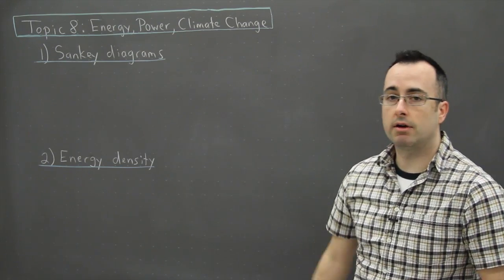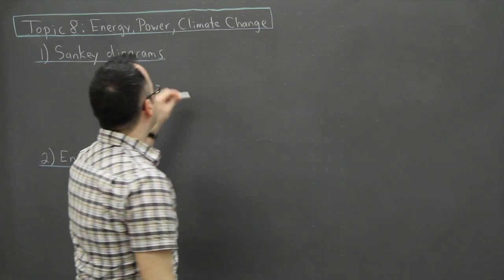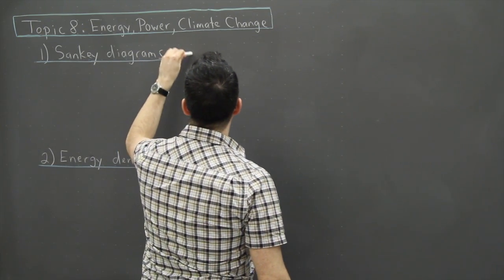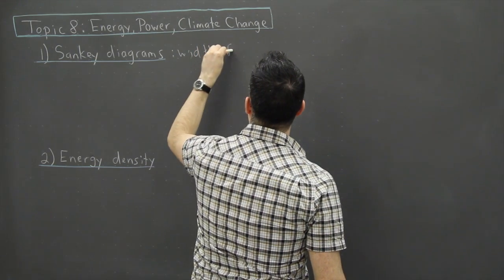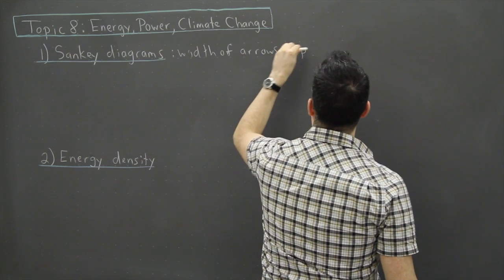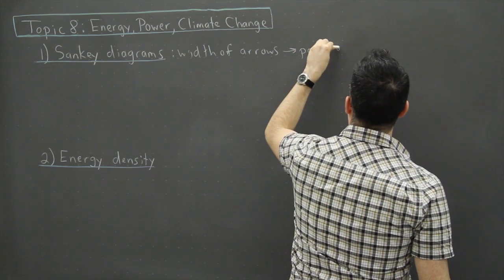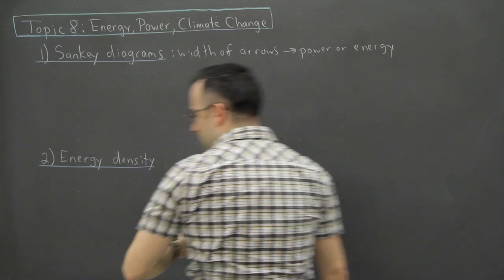So Sankey diagrams are one thing. First of all, these are going to be diagrams with arrows. And I just want to explain here that the width of the arrows represents either the power or the energy. So I'll give you an example, maybe that'll help.